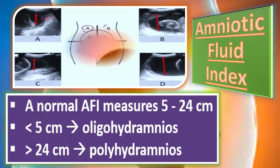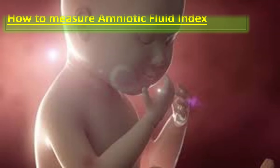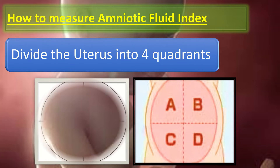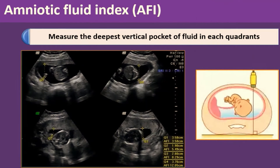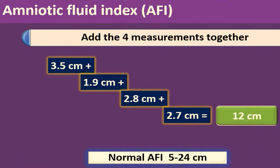How to measure the amniotic fluid index: step one, divide the uterus into four quadrants A, B, C, D; step two, measure the deepest vertical pocket of fluid in each quadrant; step three, add the four measurements together to get the amniotic fluid index. When the AFI lies in the range of 5 to 24 centimeters, that is normal. In this example, the values from the four quadrants are added to get the AFI, which is 12 centimeters — within the normal range.